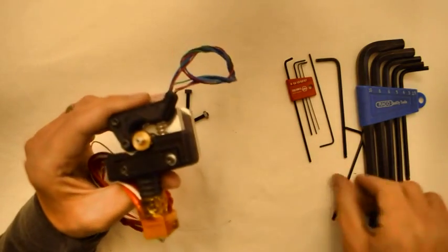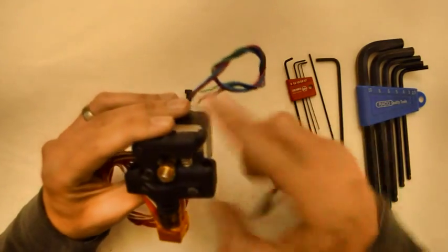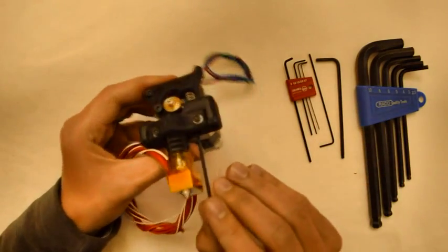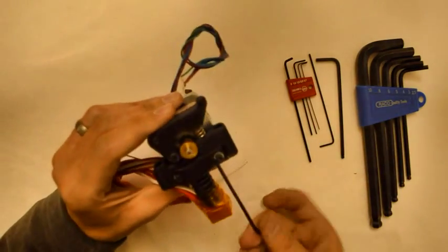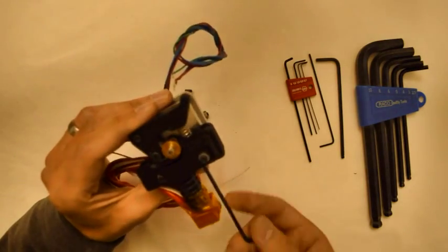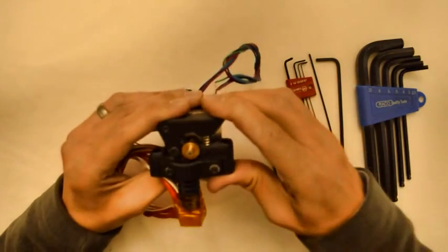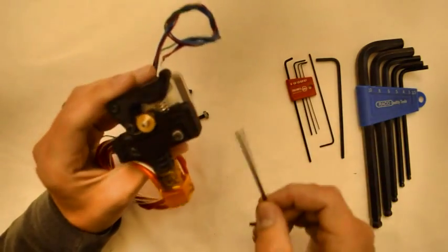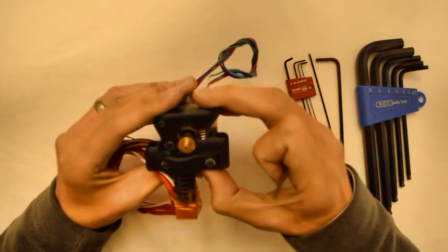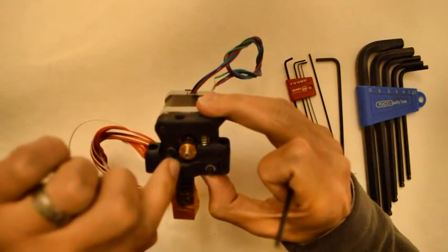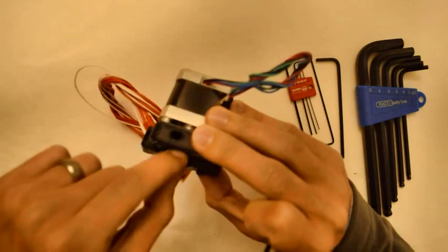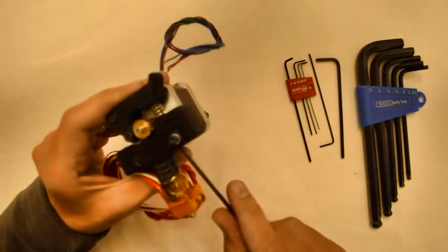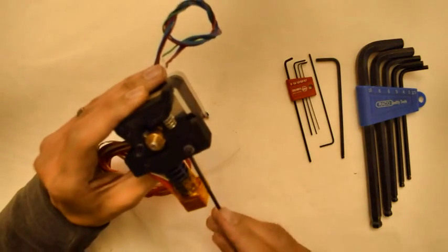The only last thing is to adjust the tension, the preload in the extruder. You can use this M5 bolt. If you tighten it, it will increase the pressure on the filament. So if you experience a lot of slippage and you cannot see the teeth of the machined bolt on the filament, then it's more probably due to a lack of tension in the extruder.